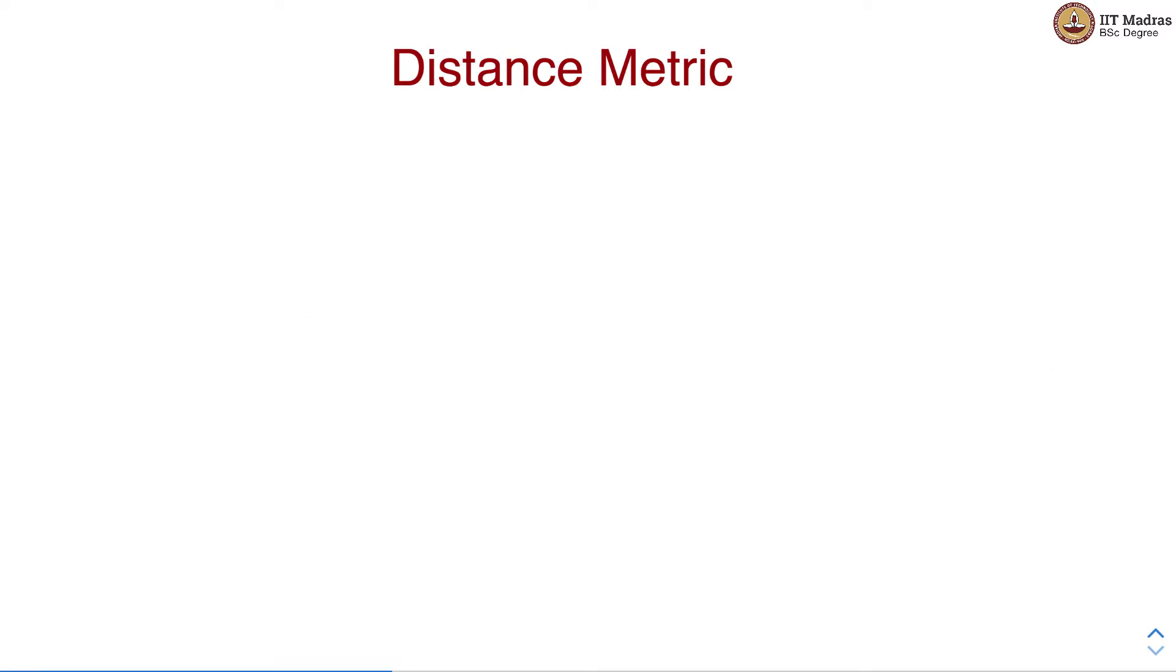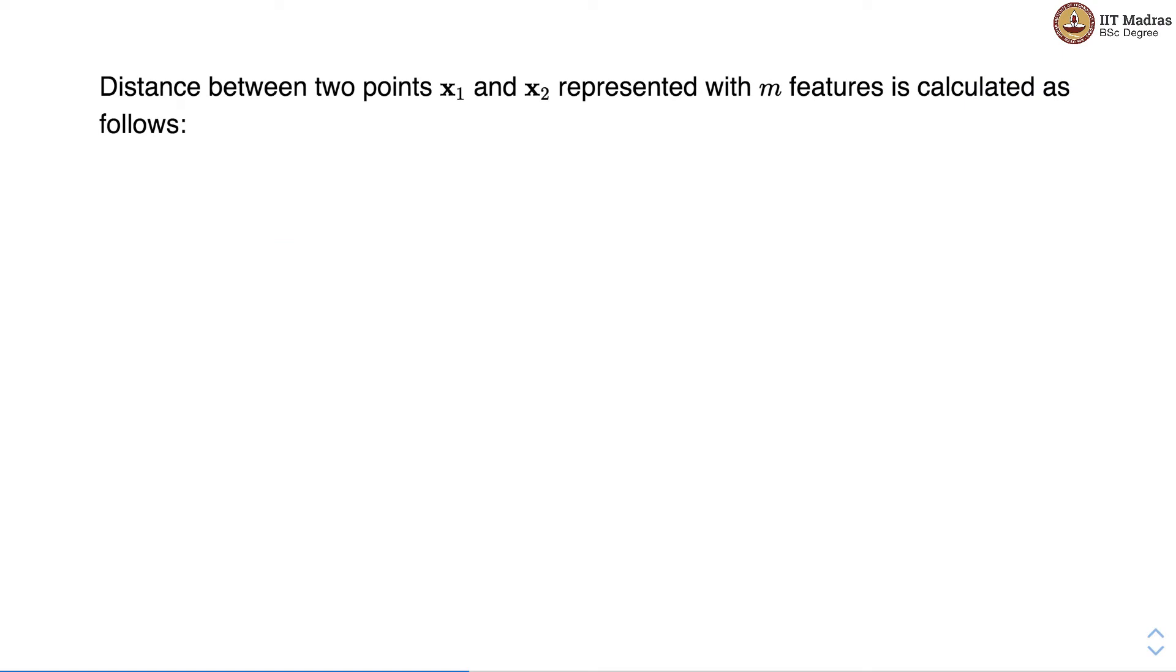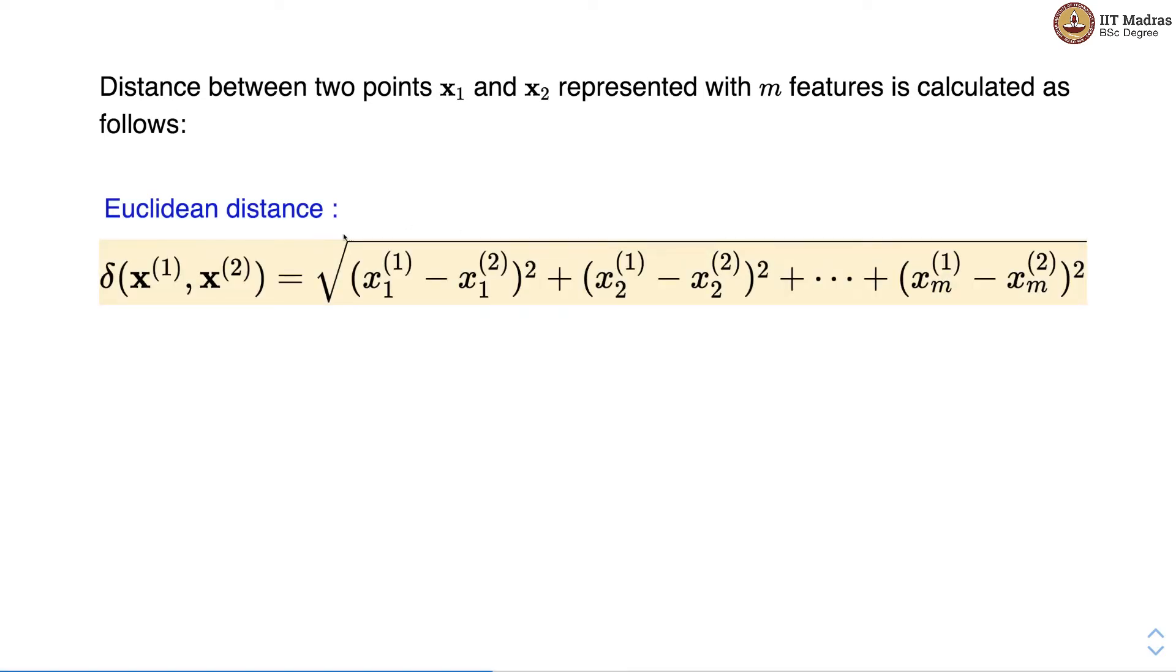Let's look at distance metrics used in calculating the nearest neighbors. Two metrics are used quite often: Euclidean distance and Manhattan distance. Distance between two points x1 and x2 represented with m features is calculated as follows. The Euclidean distance is calculated as square root of sum of square of difference between individual features of two data points, whereas Manhattan distance is calculated as sum of absolute difference between the individual features of these two data points.